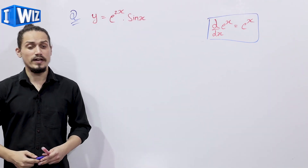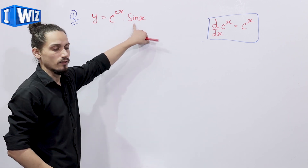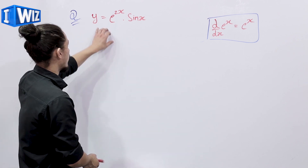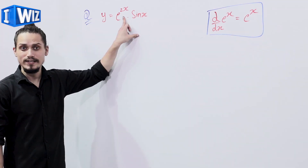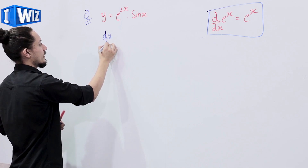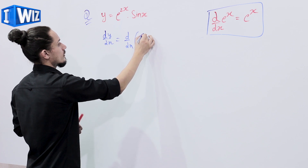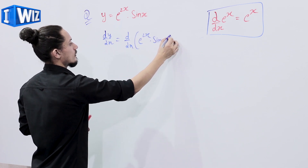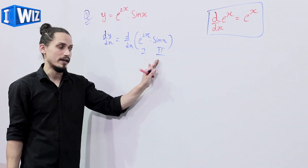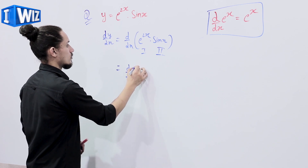The next example: we are given y = e^(2x) times sin x. So dy/dx = d/dx of e^(2x) times sin x. This is the first function and sin x is the second function. We'll use the product rule for two functions in multiplication.